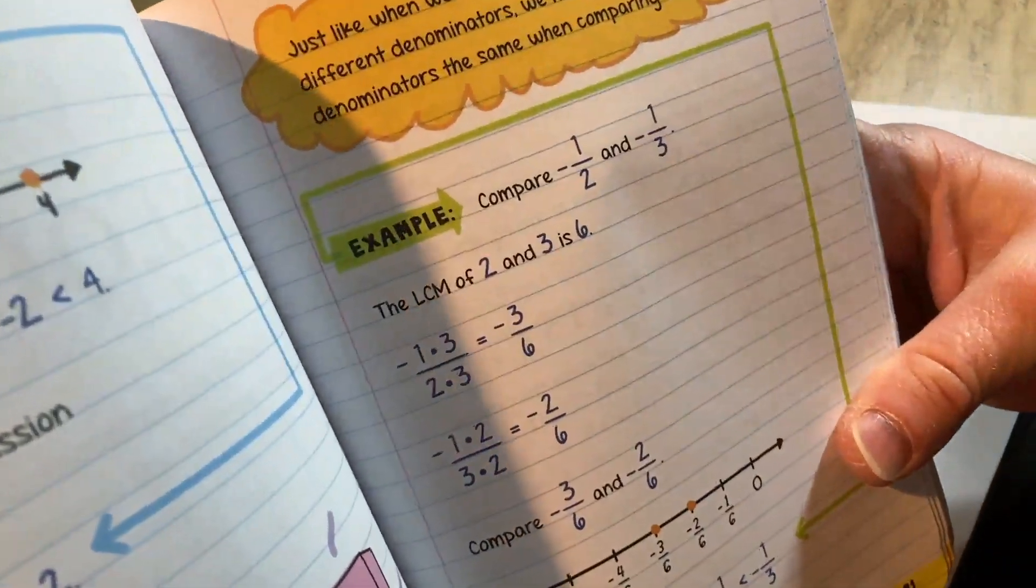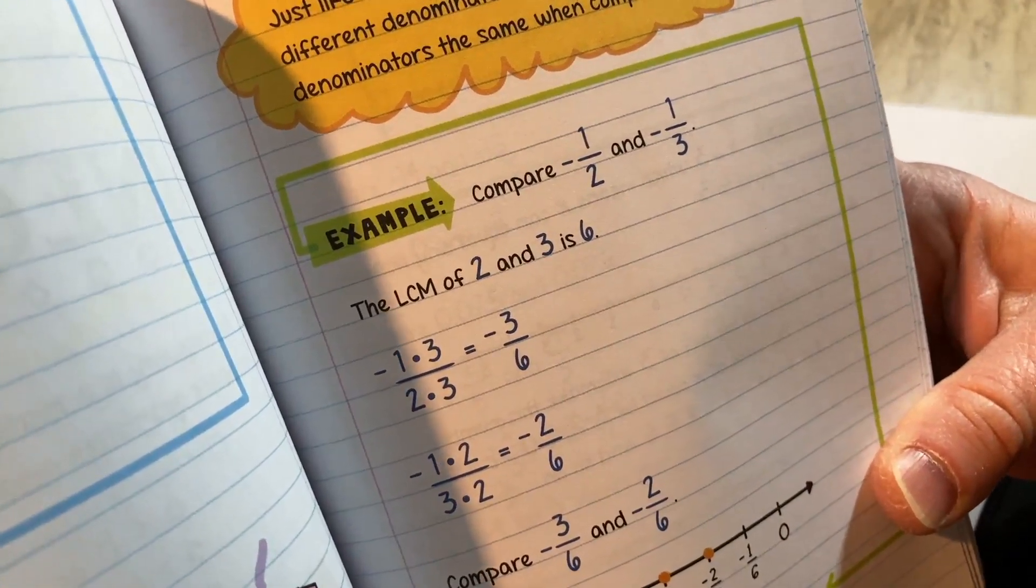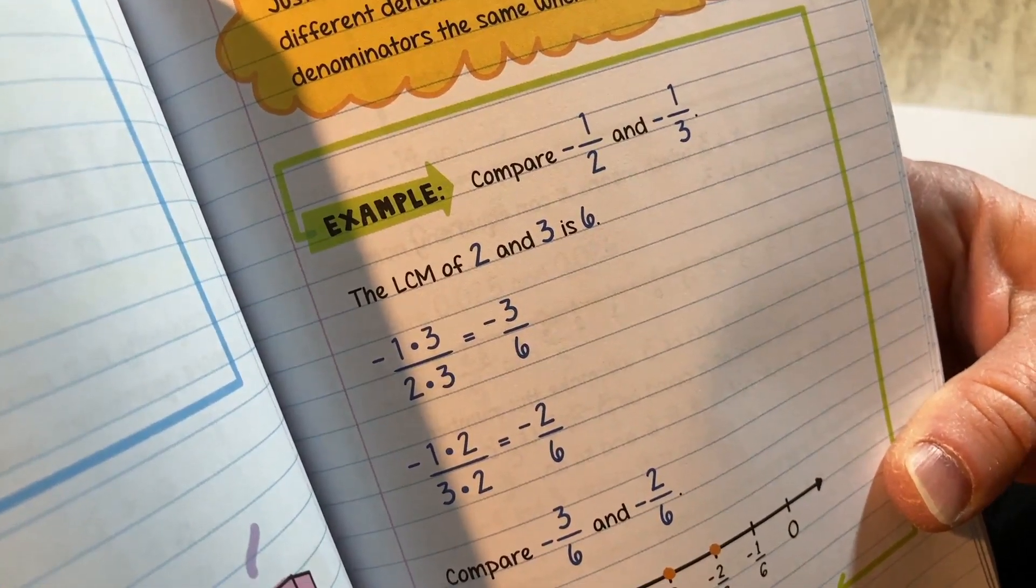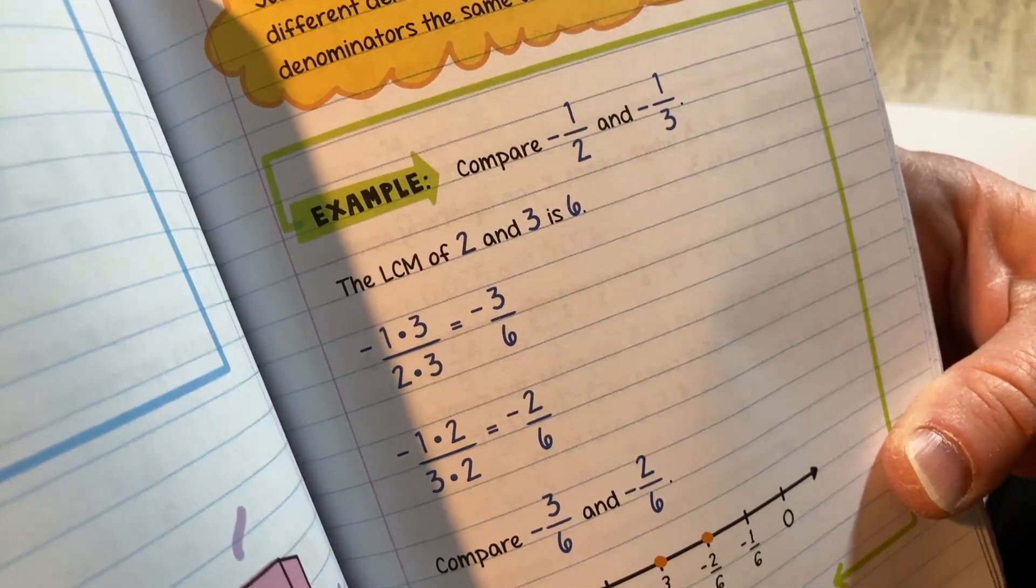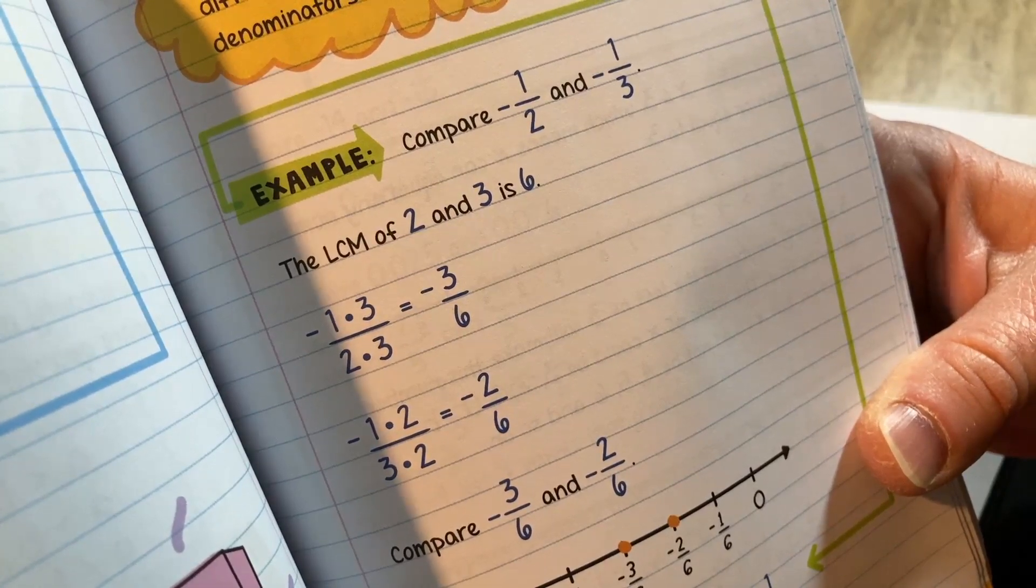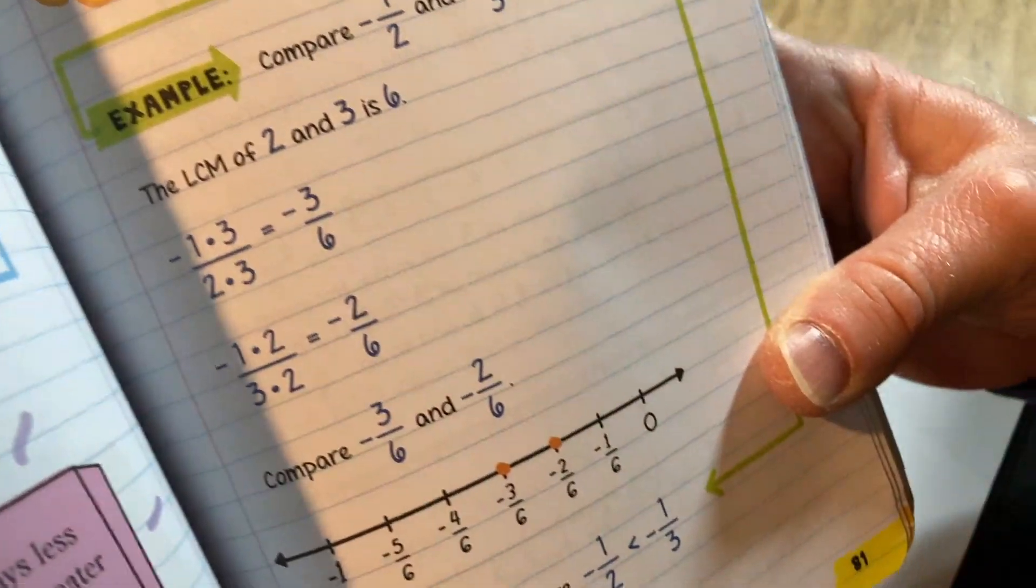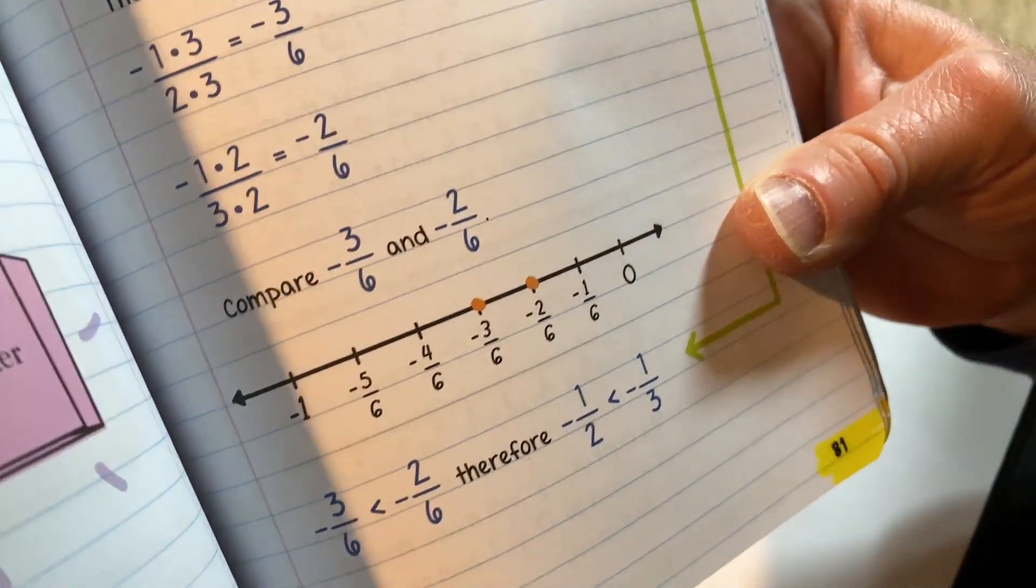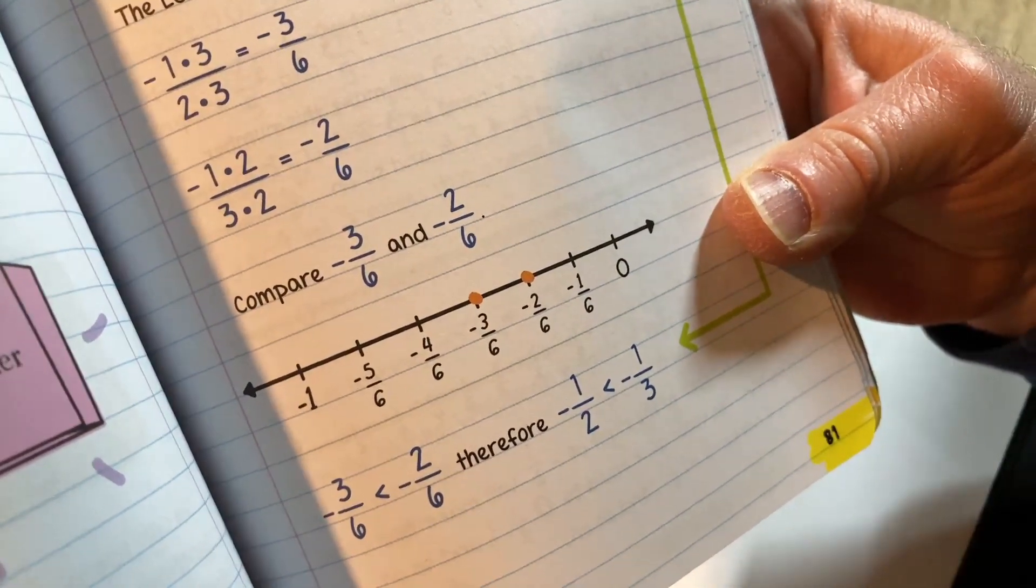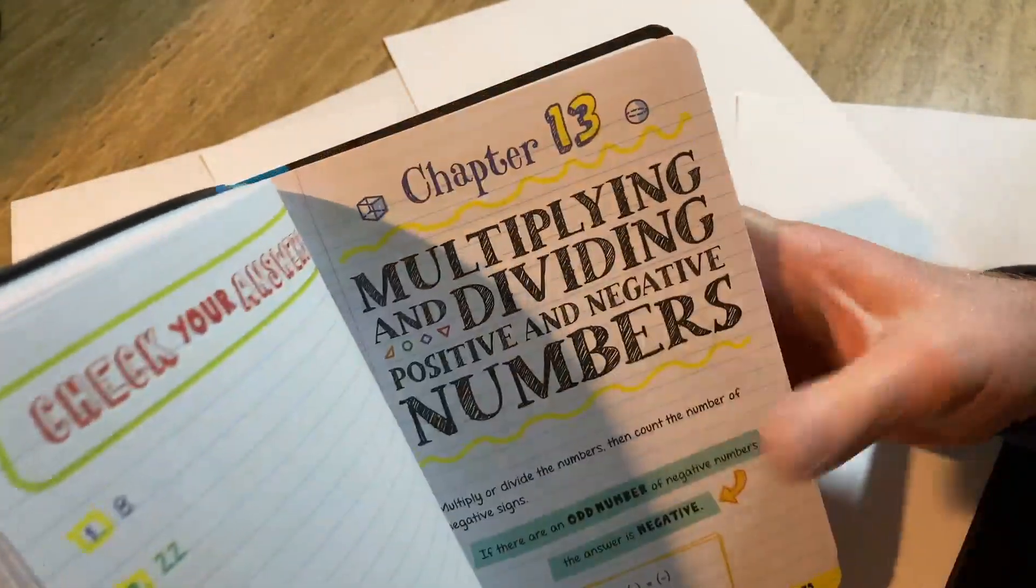Here's an example. Compare negative one-half and negative one-third. The LCM, that's called the least common multiple of two and three, is six. Cool. And then so you basically write them with the same denominator and then you can compare them like this on a number line. Pretty cool. So it shows you stuff that you might not know, even if you think you know math.